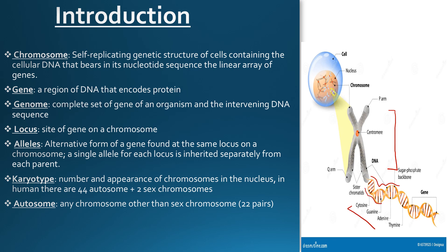This DNA is made up of these four bases: cytosine, guanine, adenine, and thymine. And this area right here is the functional part of the DNA, or the part of the DNA that encodes for a specific protein. This is known as the gene. This gene is located in a specific area on the chromosome, and this area is known as the locus of that particular gene.